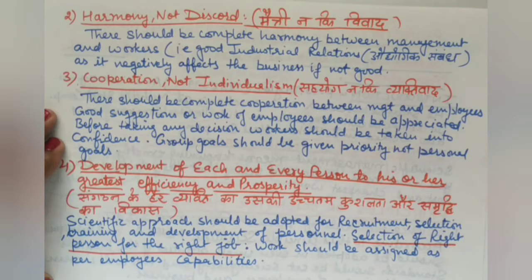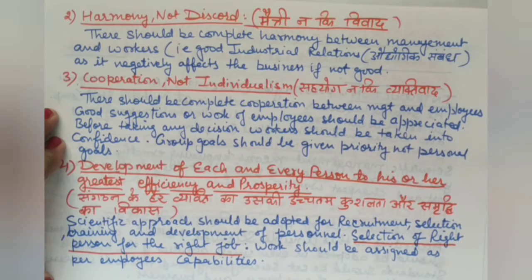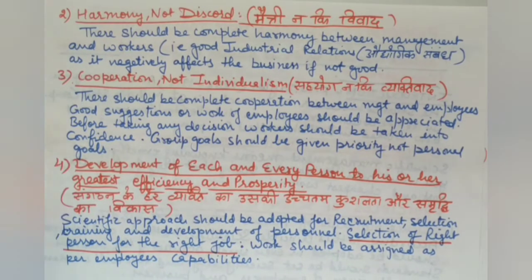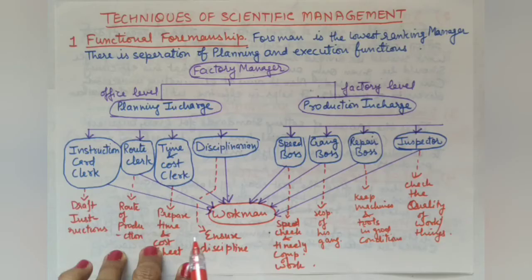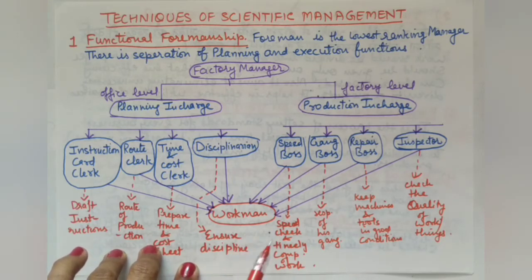We have now studied the four principles of scientific management. Next, we will learn about the techniques of F.W. Taylor — the scientific methods he developed for business.